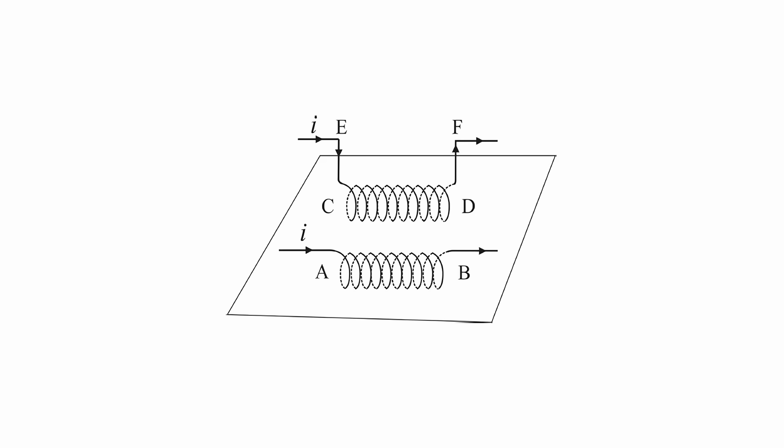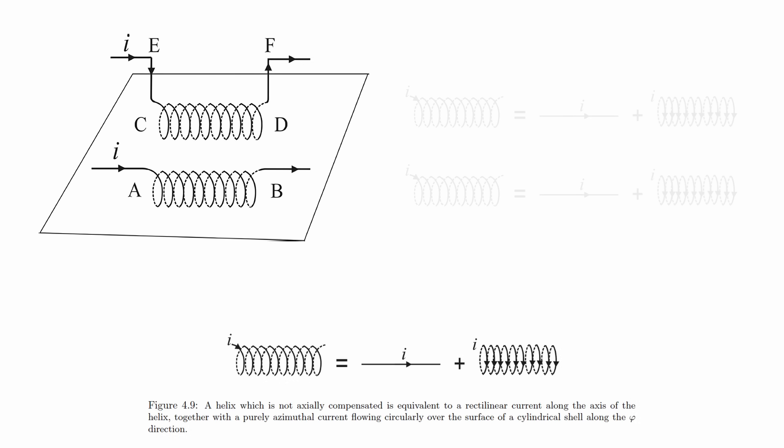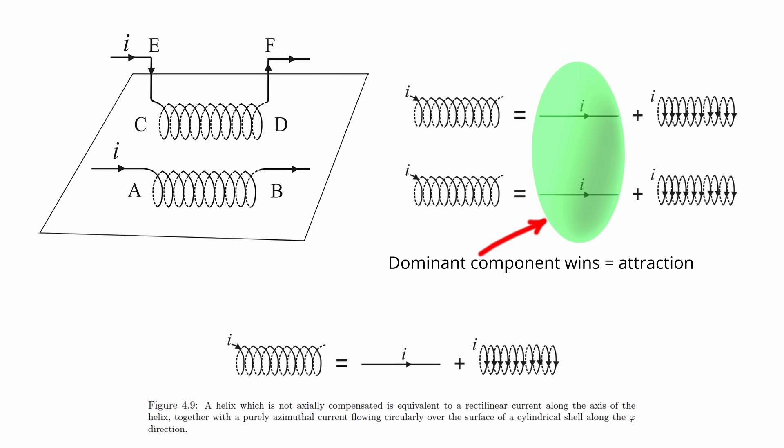One of his cleverest setups used tightly wound coils, what he called helices. Each turn of the coil contributed a small element of current. Some running side by side, others aligned head to tail. Now, according to standard thinking, these coils should repel each other. Like two bar magnets aligned the same way. But instead, they attracted. This wasn't evidence of a new attractive force. It was evidence that the standard picture was missing something.